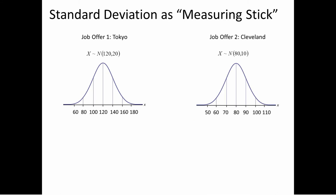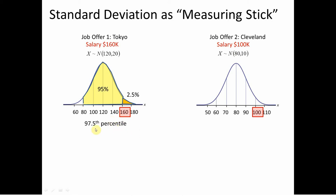Now consider the same distributions, but suppose Tokyo offered $160,000 instead. You want a salary matching Cleveland's percentile. Tokyo says they should pay you $160,000. Is that right? Well, $160,000 is two standard deviations above the mean in Tokyo — 160 minus 120 divided by 20 equals 2. So 95% within two SDs means 2.5% above, placing $160,000 at the 97.5th percentile — the same as $100,000 in Cleveland. So yes, these two salaries are now comparable — you sit in the same percentile.